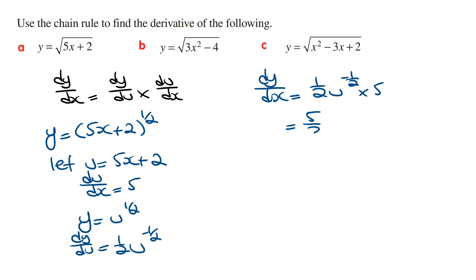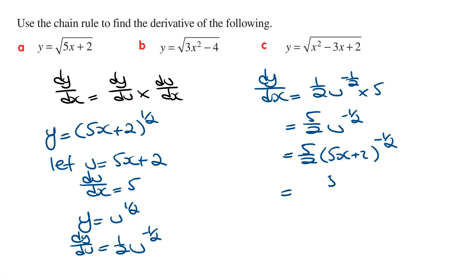Simplifying this, we get 5 over 2 times u raised to the power of minus a half. Then we replace u back as a function of x, giving 5 over 2 times 5x plus 2 raised to the power of minus a half. Because the original function used the square root sign, it's common to write the final answer using the square root sign as well, so this is equivalent to 5 over 2 times the square root of 5x plus 2.